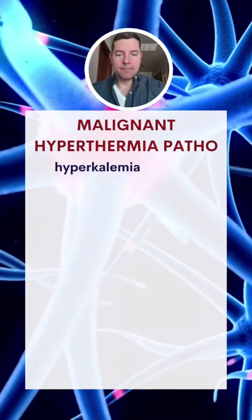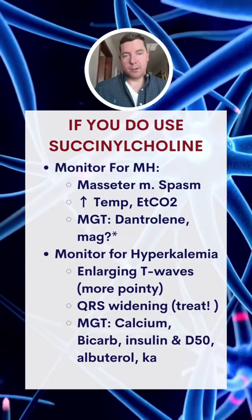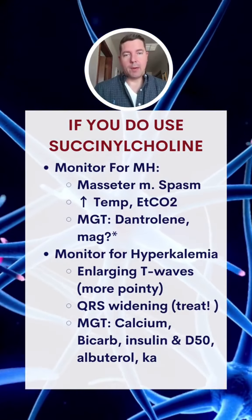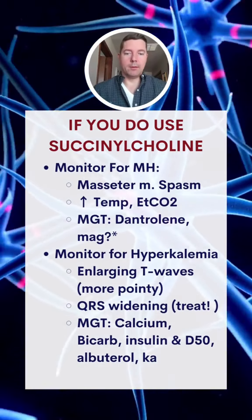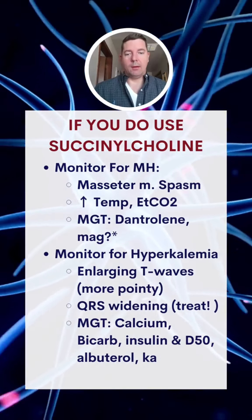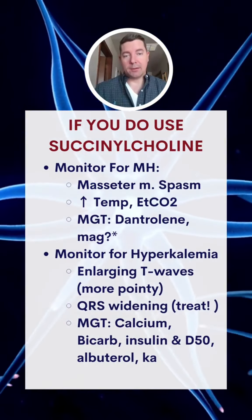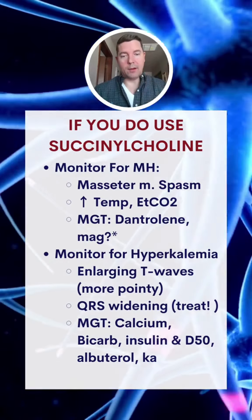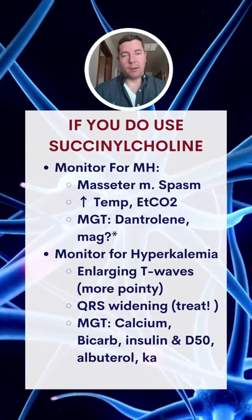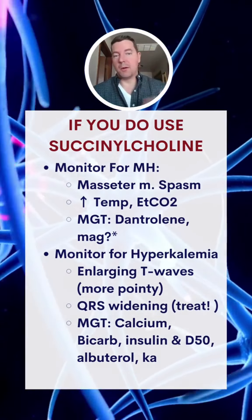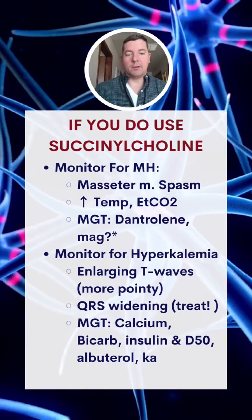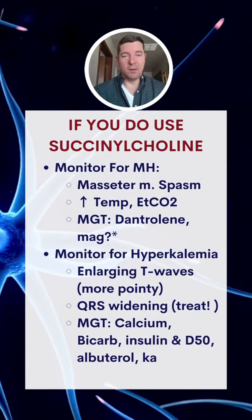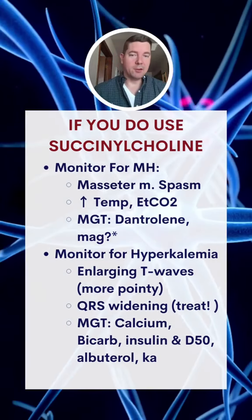Let's look at how we mitigate it. If you're still using succinylcholine for whatever reason, make sure you're monitoring for two things: malignant hyperthermia and hyperkalemia. For malignant hyperthermia, you're looking for masseter muscle spasms — your mouth will close like a venus flytrap. You're looking for temperature spikes like 104, 105, 106. You're also looking for end-tidal CO2 increases into the upper 70s, 80s, 90s, even triple digits.